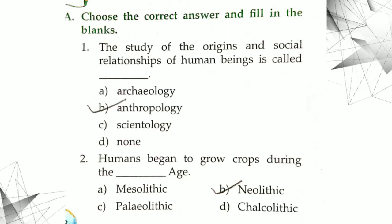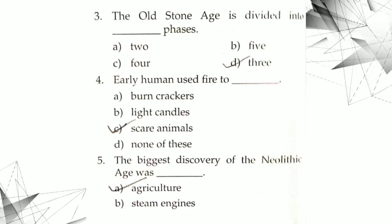Next, humans began to grow crops during the dash age. The correct answer is Neolithic. Neolithic age. The old stone age is divided into old stone age.